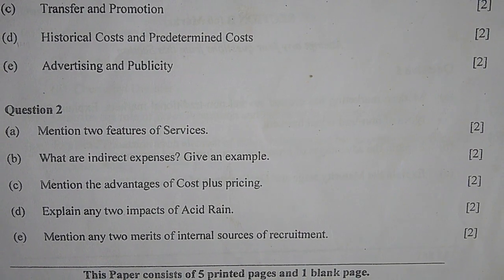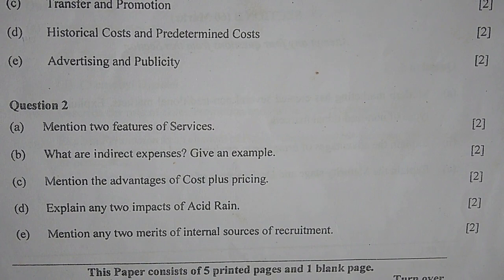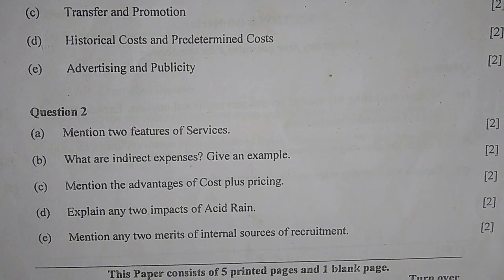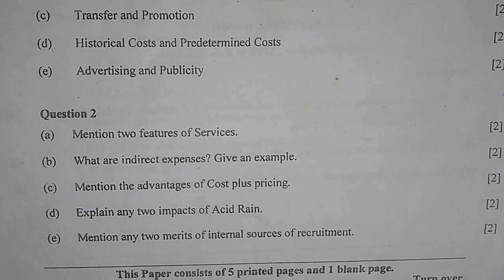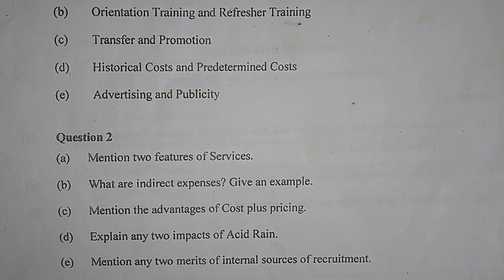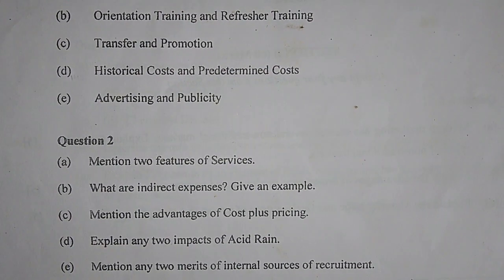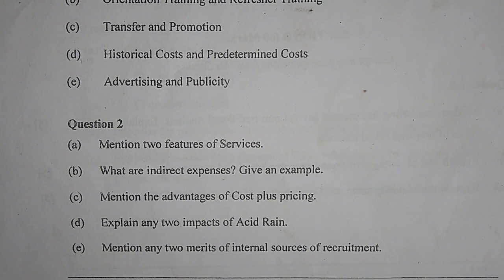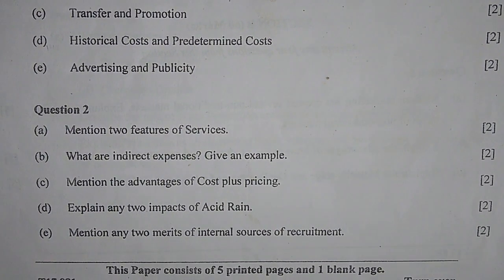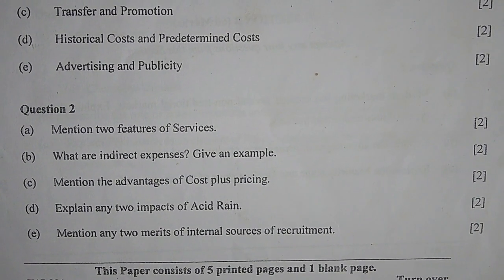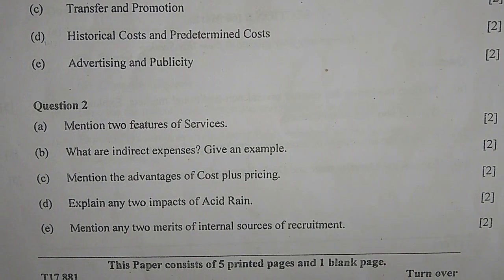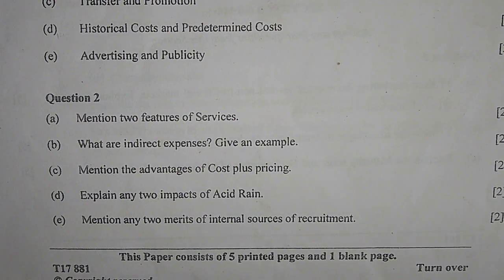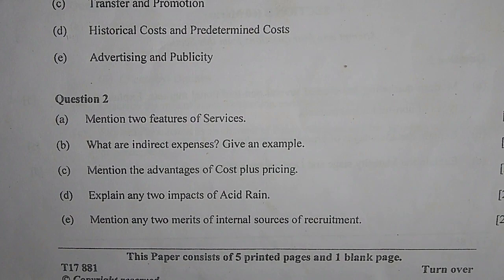Part C — Mention the advantages of cost plus pricing. Cost plus pricing means the manufacturer sells the product above the cost price in order to earn a certain sum of profit and run the business long term. The advantages are: first, it is a safe and simple approach to pricing. Second, it ensures full coverage of costs and helps in achieving a reasonable return on capital employed — giving a good return to the manufacturer who invests in the firm.